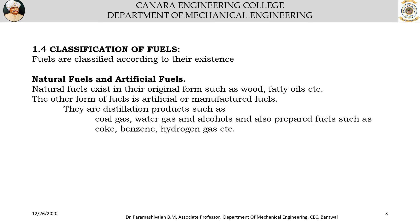Coal gas, water gas, and alcohols are by-products. For example, ethanol is a by-product obtained in the manufacture of sugar. On the other hand, coke, benzene, and hydrogen are intentionally or purposely prepared as fuels. Both categories come under artificial manufactured fuels: the first as by-products, and the second as intentionally manufactured fuels.